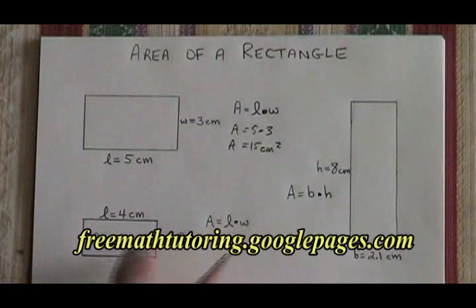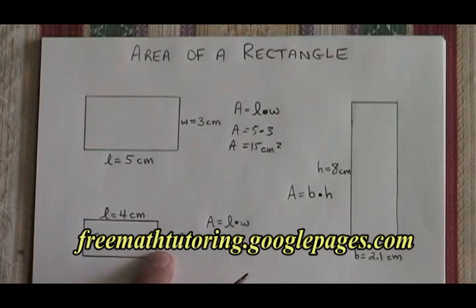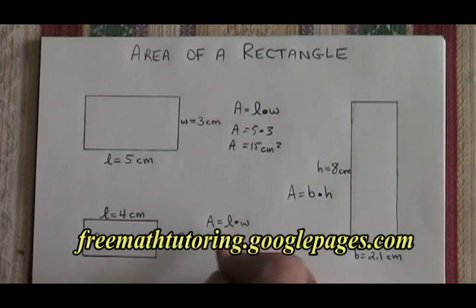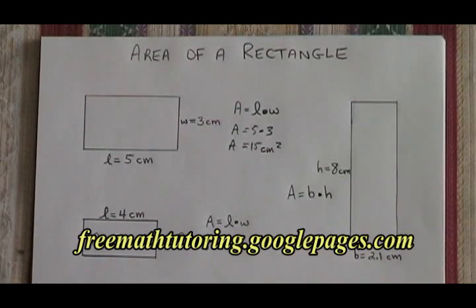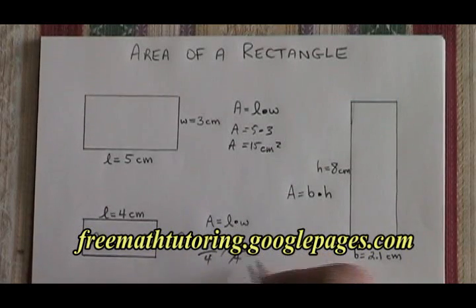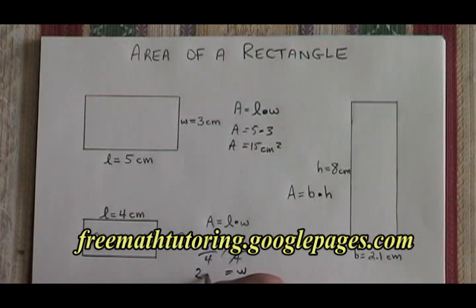In this example, we're given the area of 8 centimeters squared and the length is 4 centimeters. We'd like to know the width, so we fill in our formula. A is replaced by 8, equals L is replaced by 4, and W is our unknown. If we divide both sides by 4, our W is isolated and our width is equal to 2. Since the area was centimeters squared, the unit of distance in this problem is the centimeter.